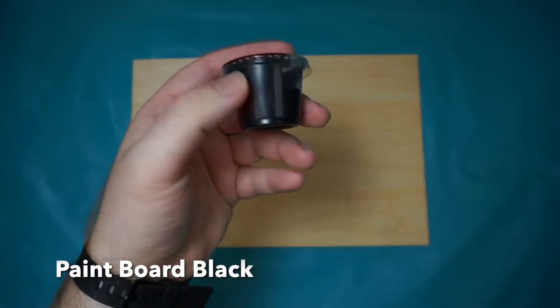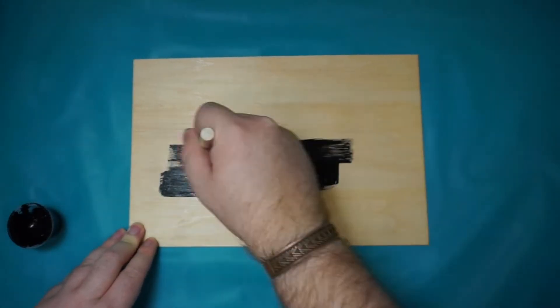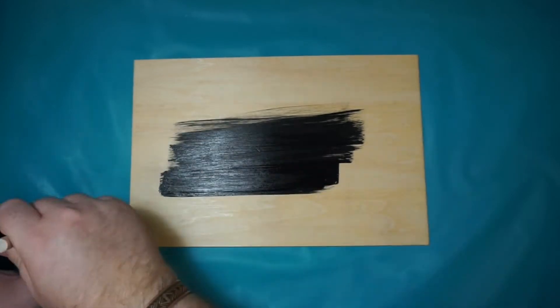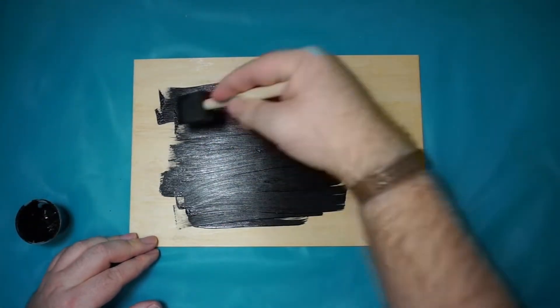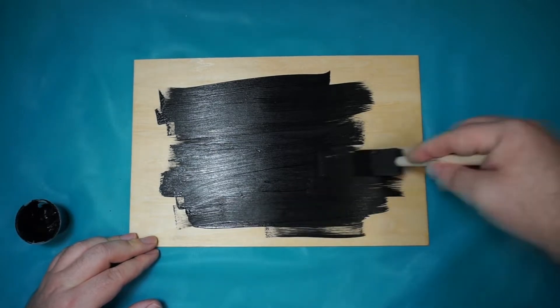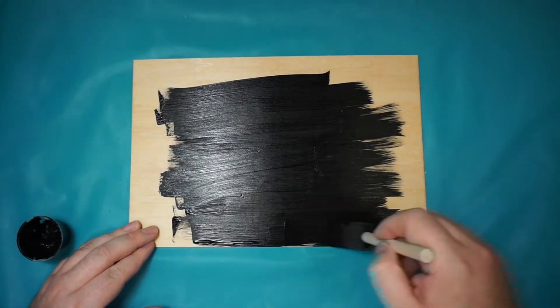First we're going to start with our black paint and do one full layer. I'm only going to do one layer for this tutorial, but you can do more if you want it really dark and to make sure nothing comes off. Make sure to cover everything with black.